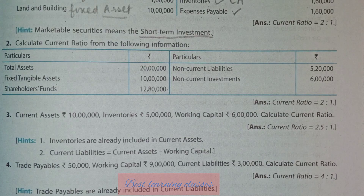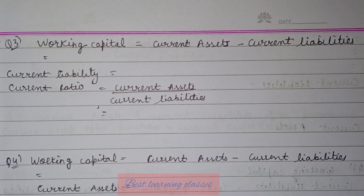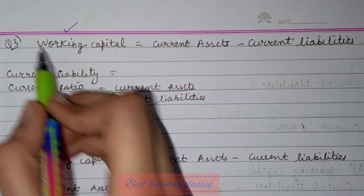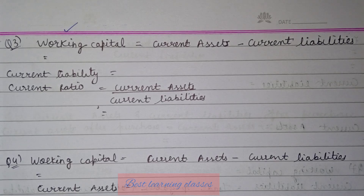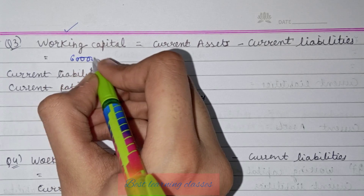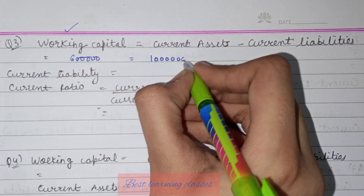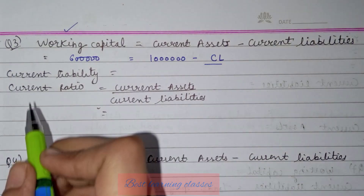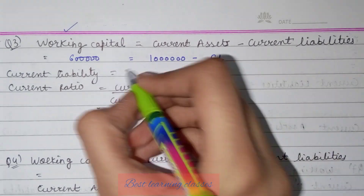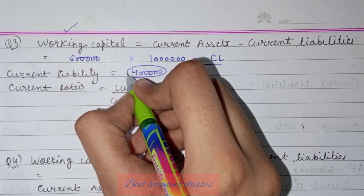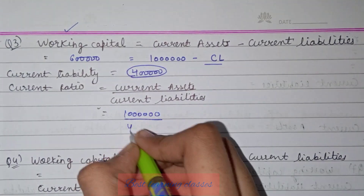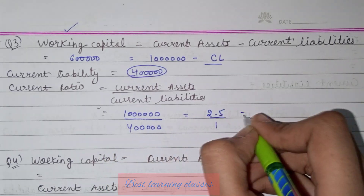Working capital formula: current assets minus current liabilities. If working capital is given and one of the two values is known, you can find the other. Working capital = 6 lakh, current assets = 10 lakh. Moving current liabilities to the other side: current liabilities = 10 lakh minus 6 lakh = 4 lakh. Current ratio = 10 lakh / 4 lakh = 2.5:1.